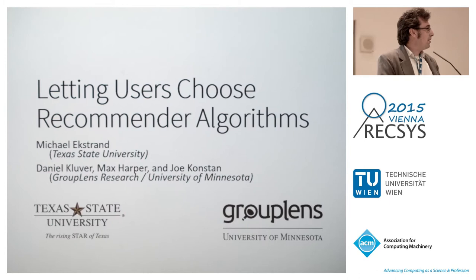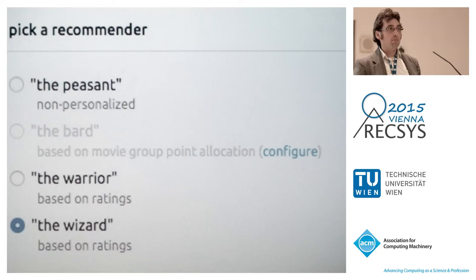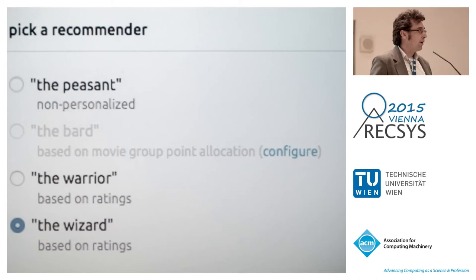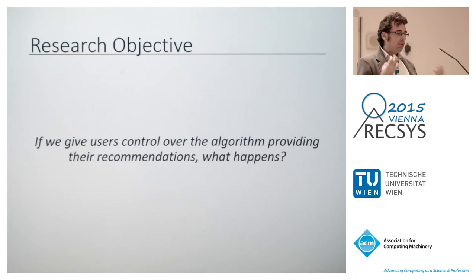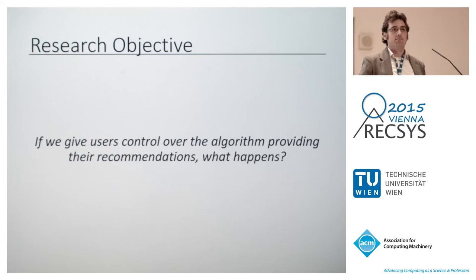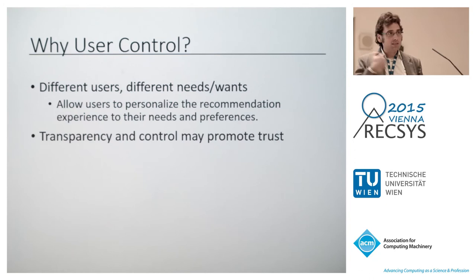Good afternoon. I'm Michael Ekstrand at Texas State University, and I'm going to talk about letting users choose the recommender algorithms — work done in conjunction with folks at GroupLens, particularly Dan Kluver, Max Harper, and Joe Constan. This paper is about this menu and what users do with four radio buttons. Our goal is to look at: if we give users control over the algorithm providing recommendations, what happens?